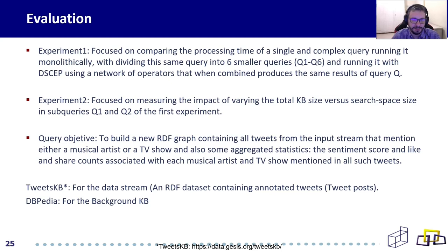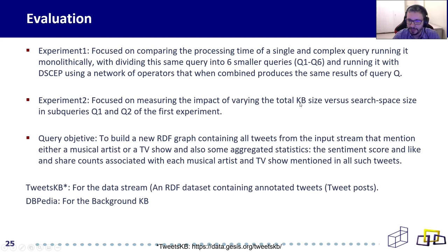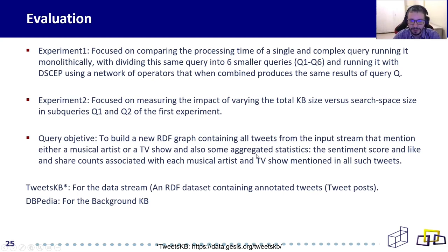We prepared two different experiments for this implementation. The first experiment is more focused on comparing the processing time of a single complex query running monolithically versus dividing the same query into six smaller queries run in parallel using our infrastructure. The second experiment is focused on measuring the impact of varying the total knowledge base size versus the search phase size. Our data stream is built with Tweetscape, a dataset containing annotated tweets where each tweet has an entity that exists on Wikipedia. The query objective is to build a new RDF graph containing all tweets from the input stream that mention a musical artist or a TV show, along with aggregated statistics.